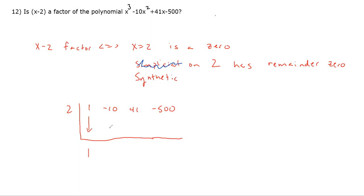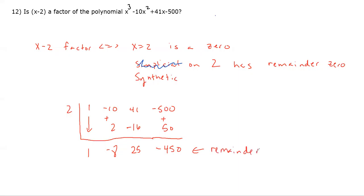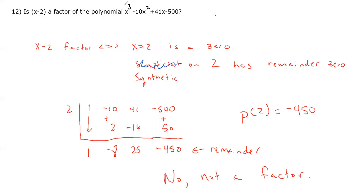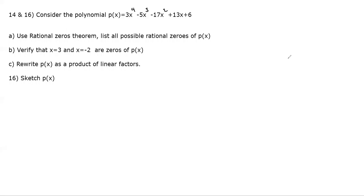Bring down 1; 2 × 1 = 2; −10 + 2 = −8. Then 2 × (−8) = −16; 41 + (−16) = 25. Then 2 × 25 = 50; −500 + 50 = −450. The remainder is −450, not zero. By the remainder theorem P(2) = −450, so x − 2 is not a factor.